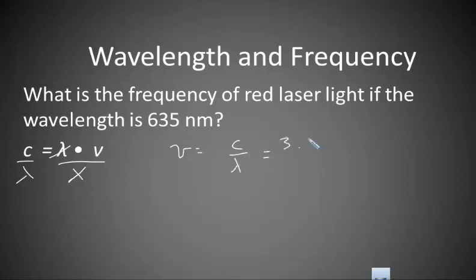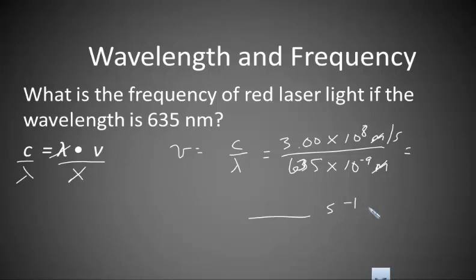My frequency equals c over lambda. My speed of light is 3.00 times 10 to the 8th meters per second. I'm going to divide that by wavelength, 635 nanometers, but I need that to be in meters so it's times 10 to the negative 9th meters. The meters will cancel and I'll end up getting an answer in seconds to the negative 1, which are also known as hertz.